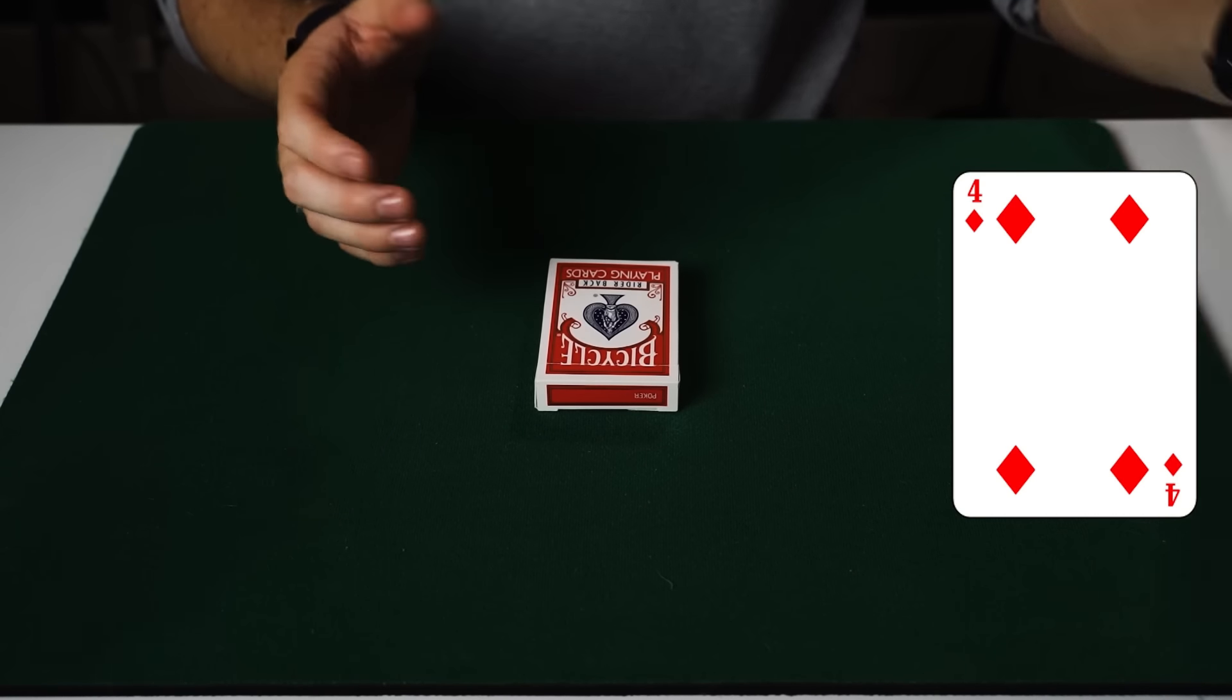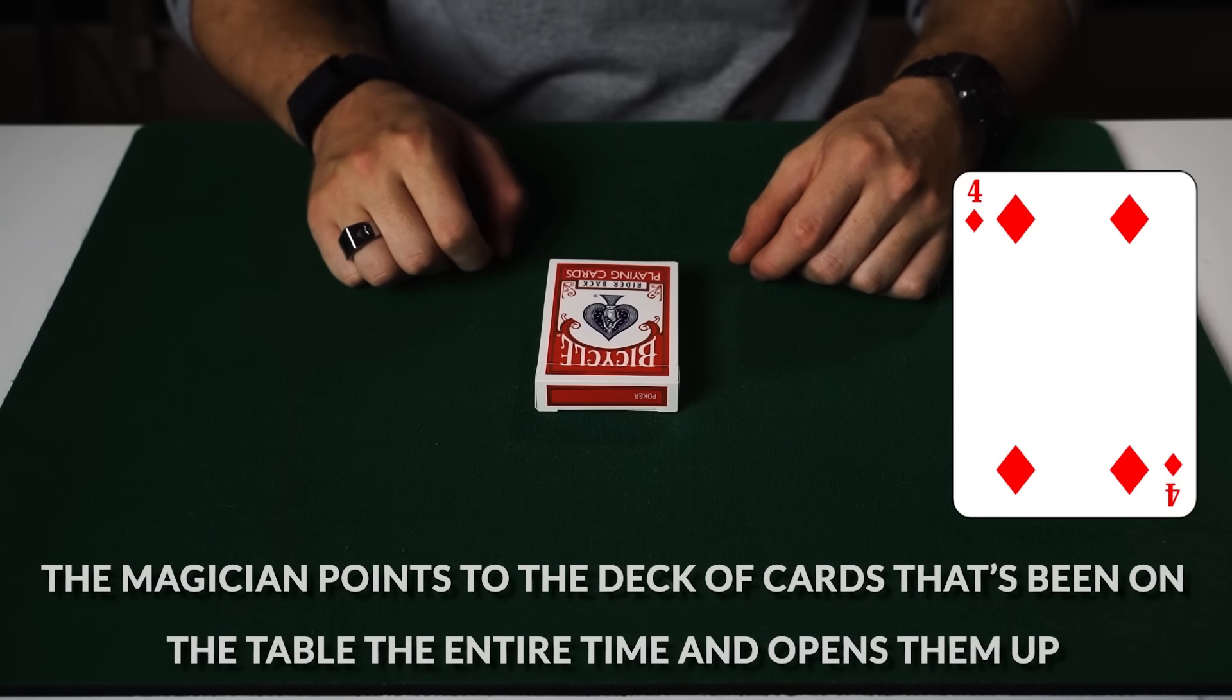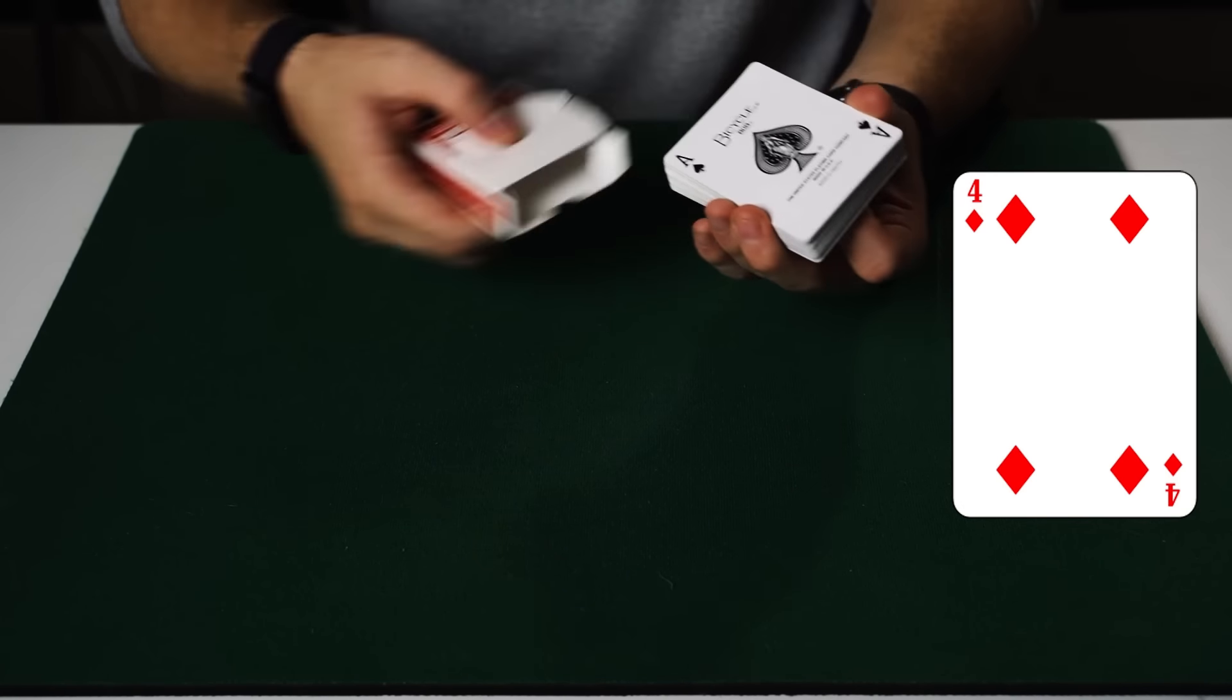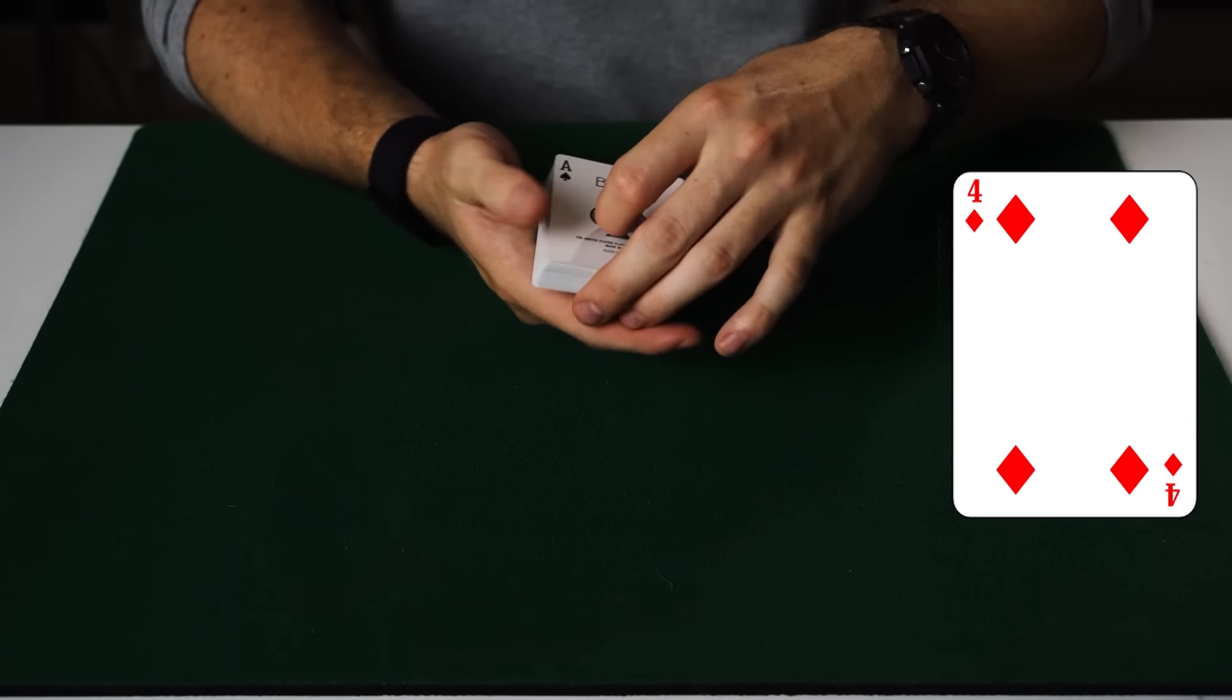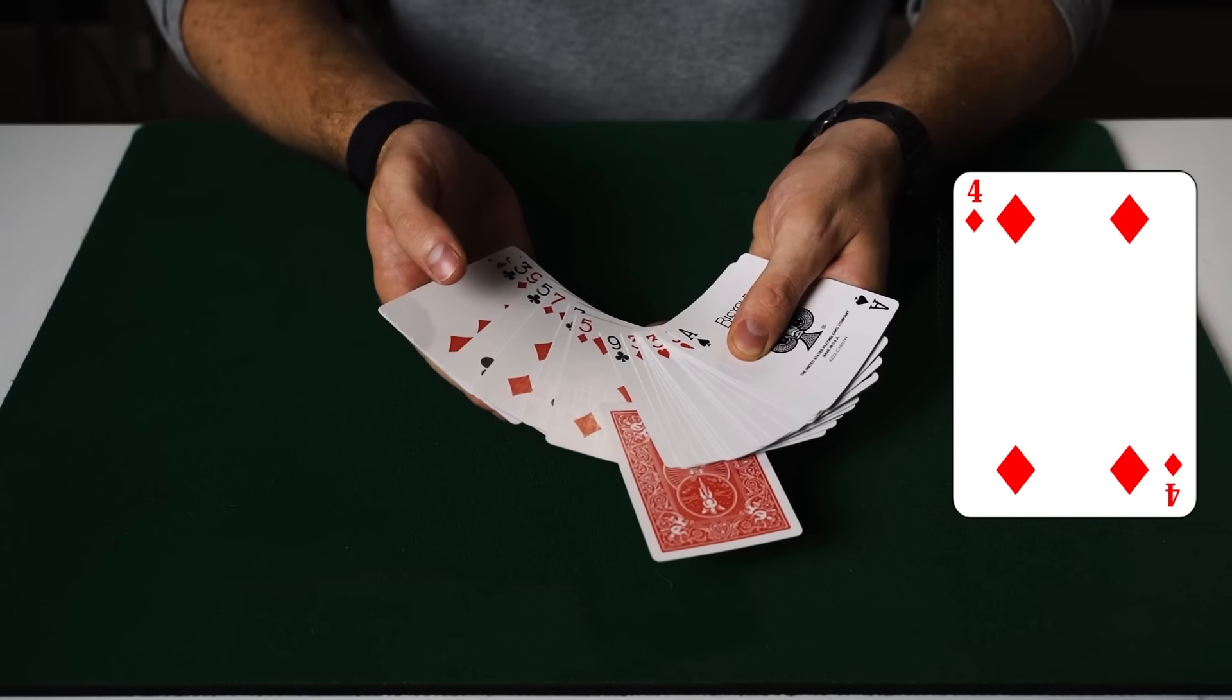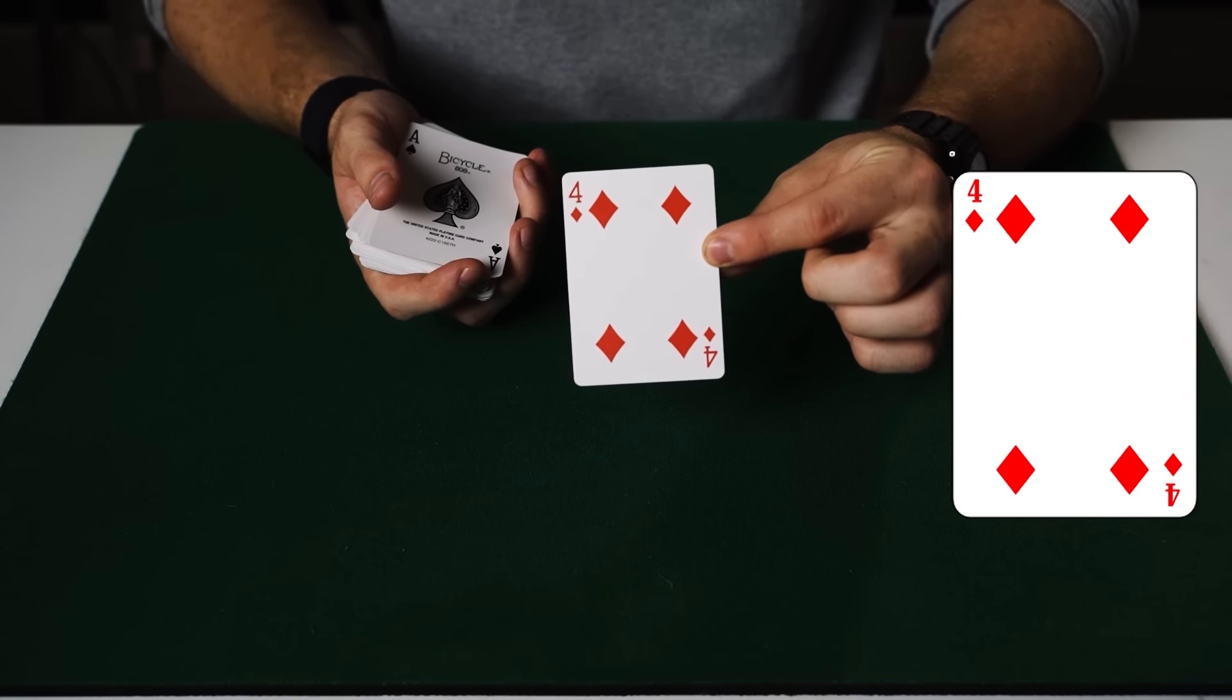At this point, the spectator then says out loud that they're thinking of the four of diamonds. And the magician points to the deck of cards that's been on the table the entire time and opens them up. He says that the spectator could have thought of any card that they liked. But there's one card in this deck, as he promised, that's face down. If we go through the cards, we can see there's one card in the deck that's face down. And it's not any card. It's the spectator's four of diamonds.